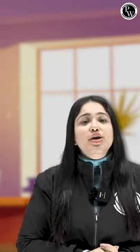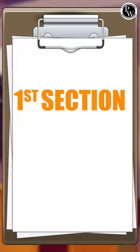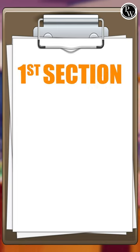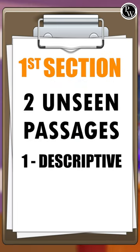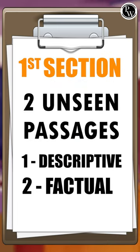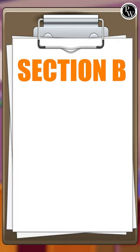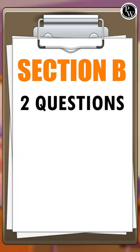You're going to have four sections in the question paper. The first section will have two unseen passages — one descriptive and one factual passage. When you go to Section B, you'll have two questions, out of which you'll get choices in both of them.